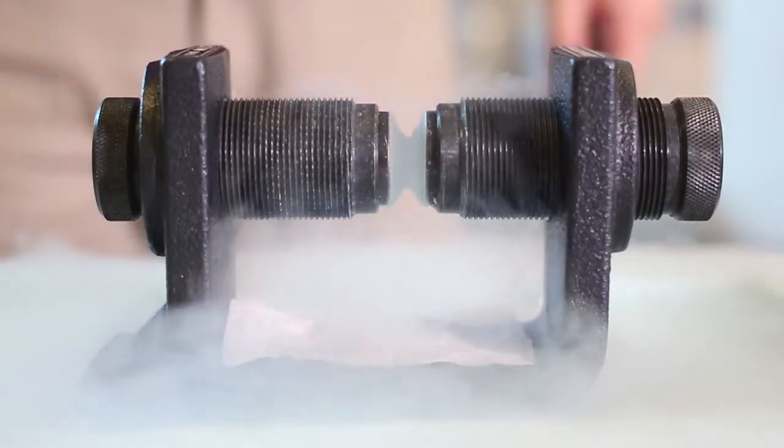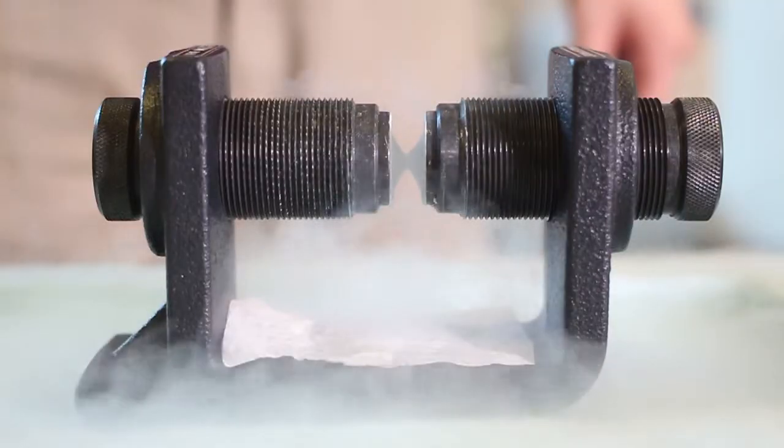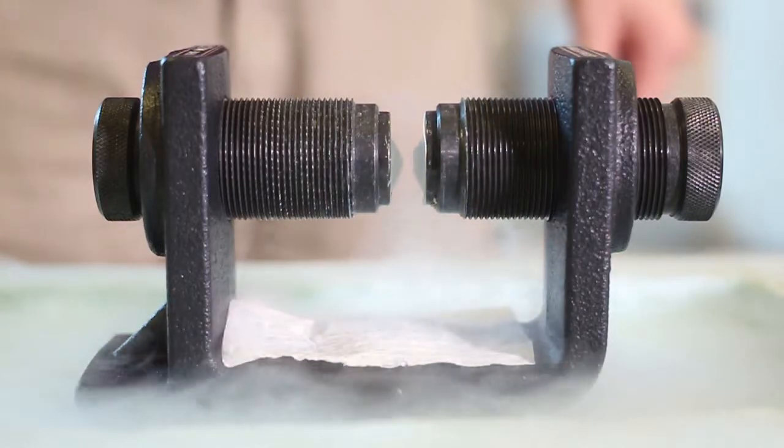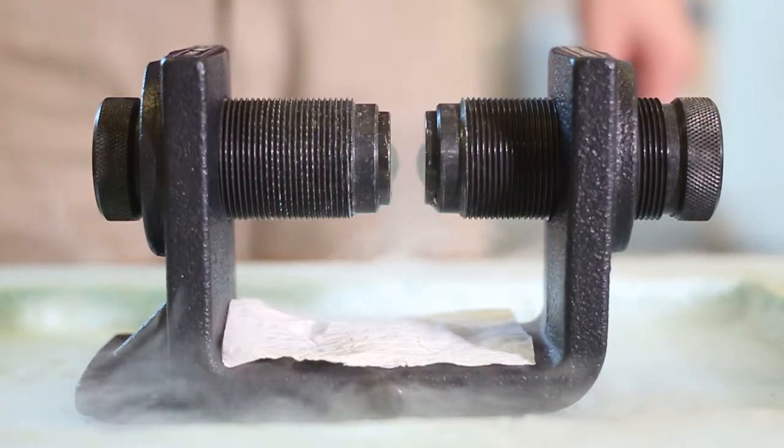This is because the oxygen is paramagnetic, so each molecule is like a tiny magnet. When it's cooled down into its liquid state, the molecules slow down and are able to exhibit their magnetic properties.